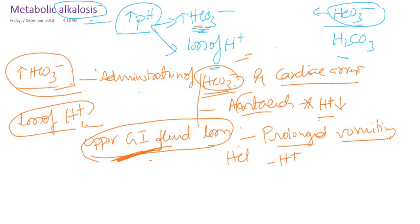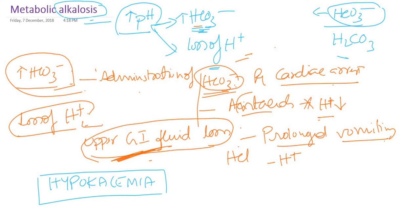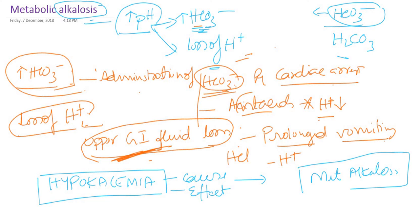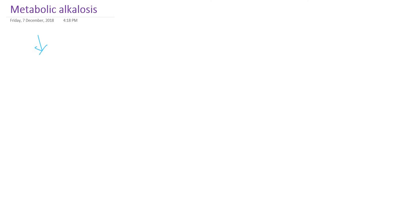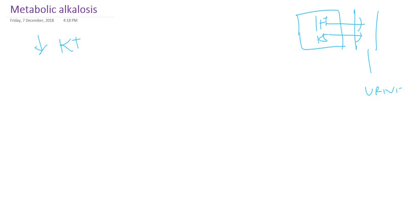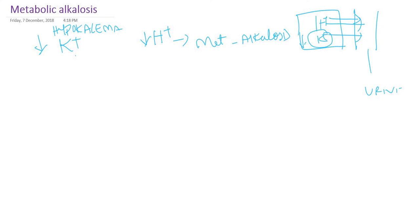Another cause — an interesting feature — is hypokalemia. This is interesting because it is a cause as well as an effect. Hypokalemia leads to metabolic alkalosis. Hypokalemia means decrease in potassium. Normally in the kidney tubule there is secretion of hydrogen ion and potassium into the tubular fluid. When there is less potassium — hypokalemia — more and more hydrogen ion will be lost. This loss of hydrogen ion leads to metabolic alkalosis.